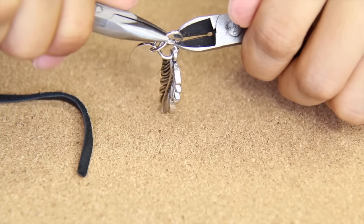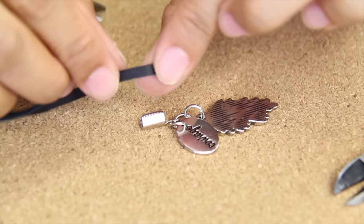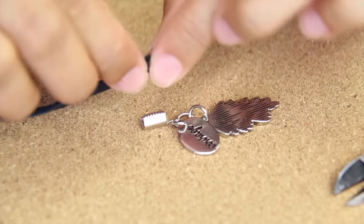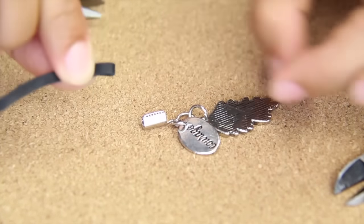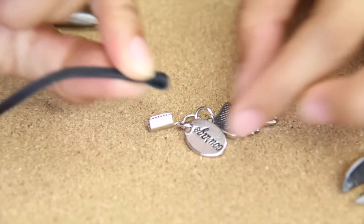Simply close the jump ring and add the crimp bead to the end of the cord. For mine I folded it in half just because my cord is a little thin and you're going to close the crimp bead by pushing together both sides.